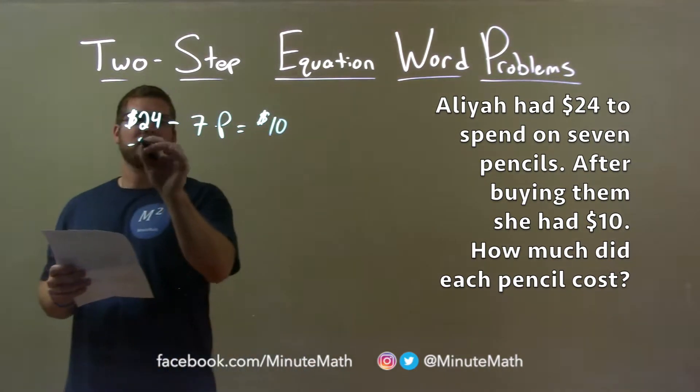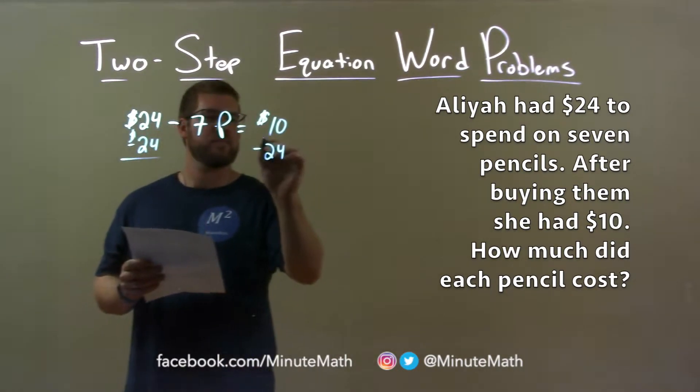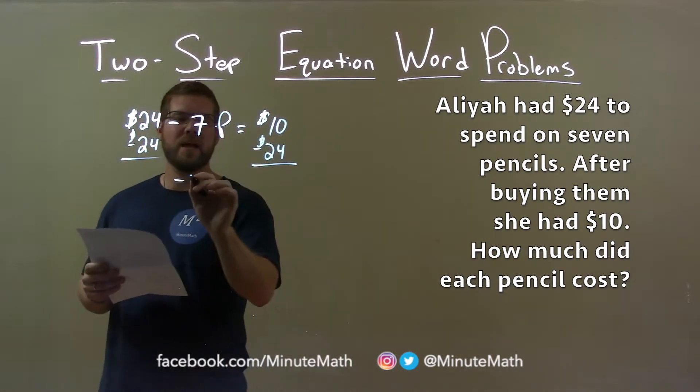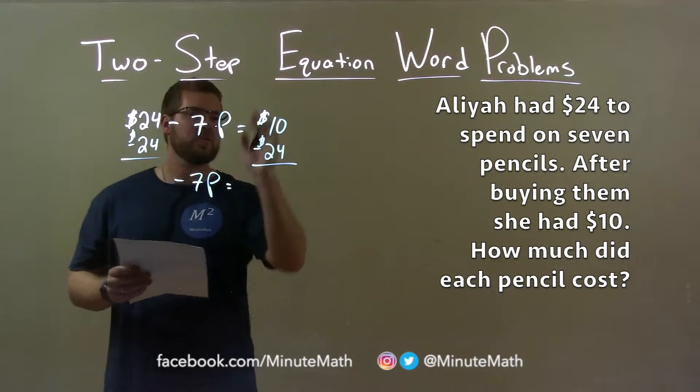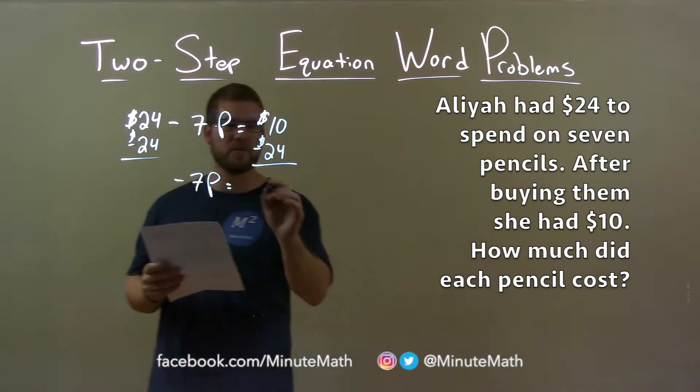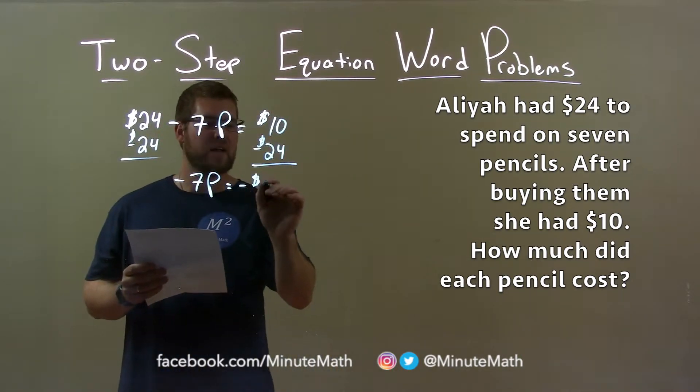Well, I subtracted $24 from both sides, and that leaves me with negative 7P equals 10 minus $24, which is negative $14.